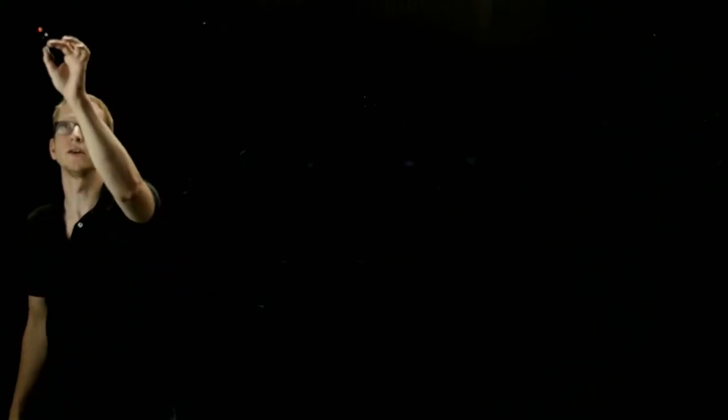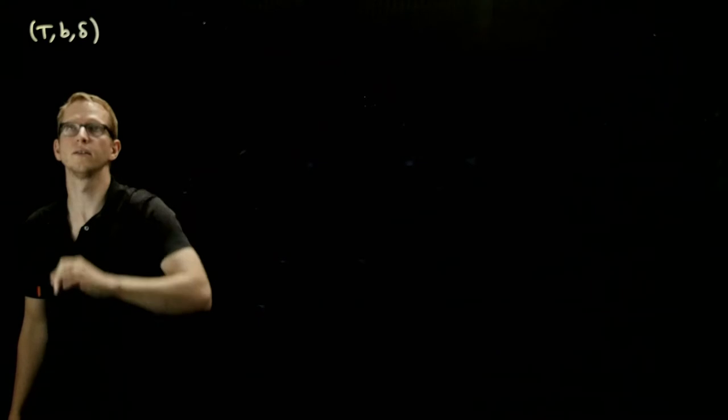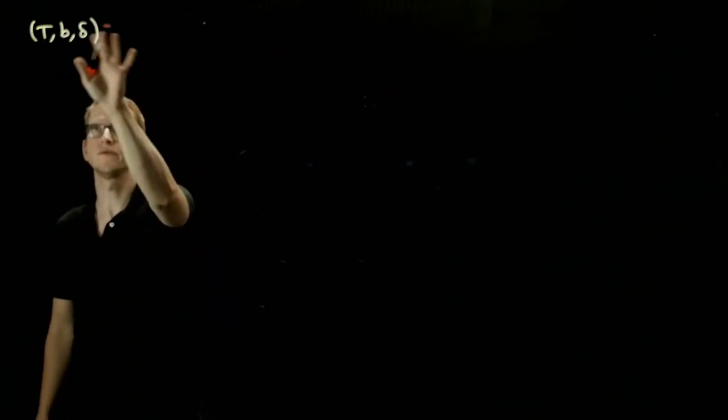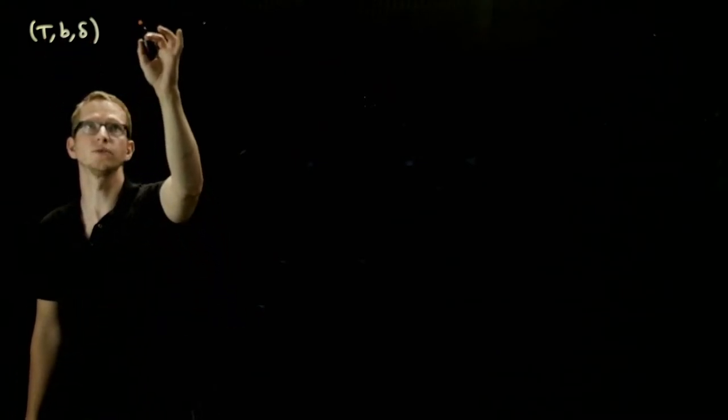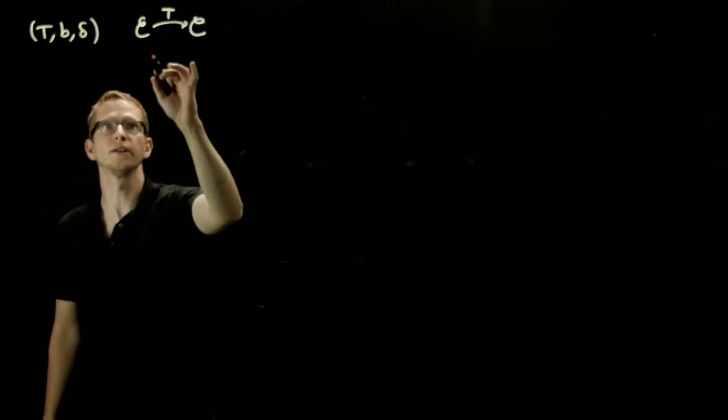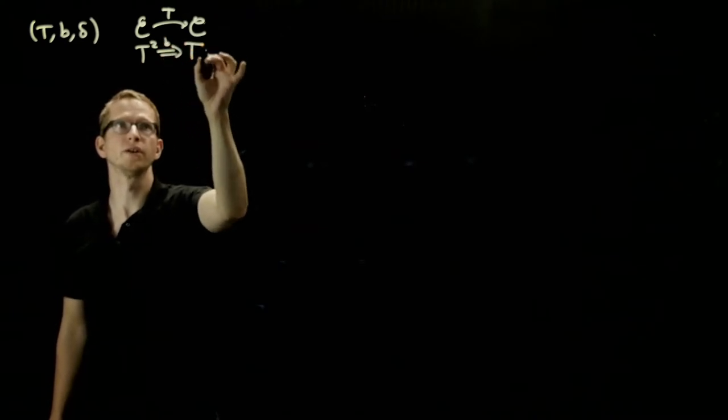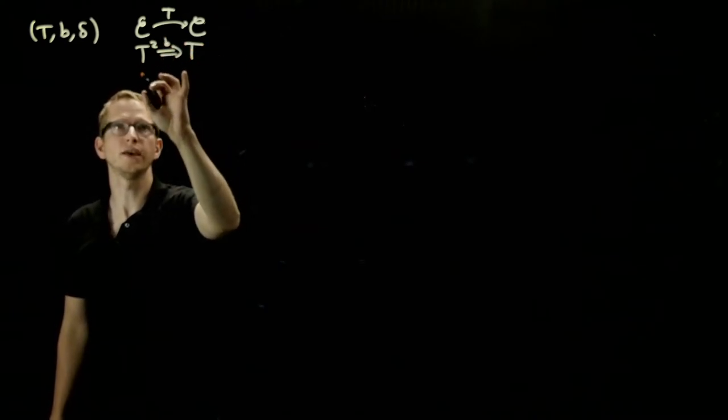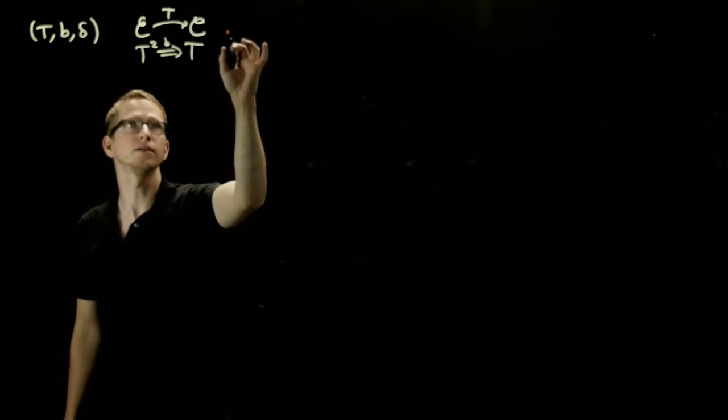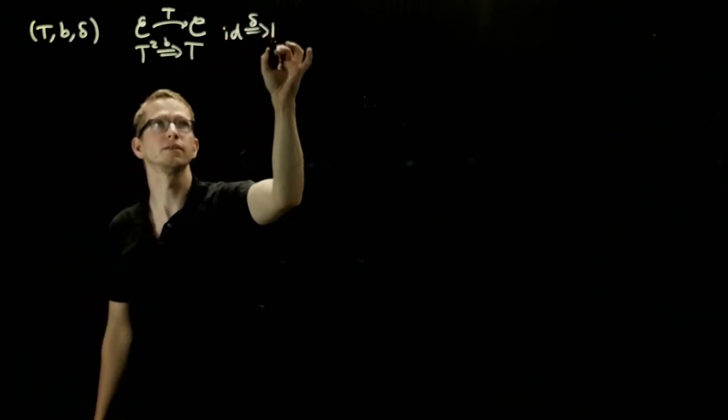Associated to every monad is an interesting category called the Kleisli category of that monad. So given a monad T, B, and delta, remember that T is a functor from a category to itself. We should write all this out so that we have everything on hand. B is a natural transformation from T squared to T, and delta is a natural transformation from the identity to T.